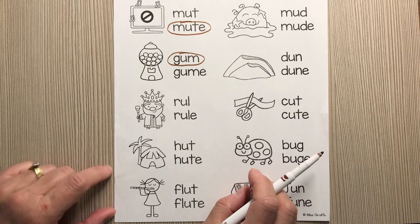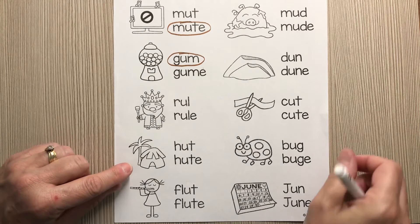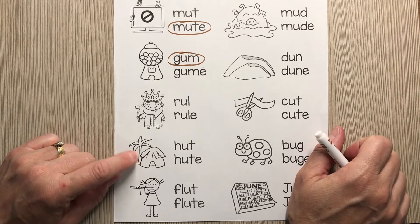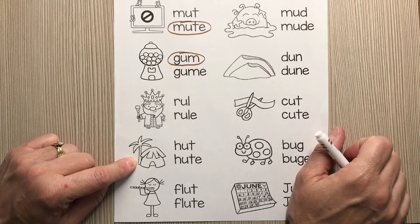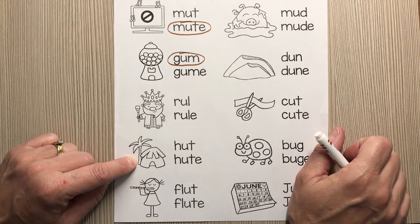If I'm going too fast and you need more time, just press pause at any time. The next picture — this is a hut. One of the words says 'hut' and one of the words says 'hewt.' Find the word that says 'hut' and circle the word that says 'hut.'